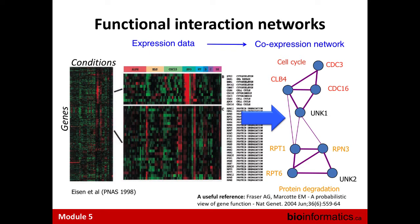If you represent this data as a network connecting genes based on similarity in expression pattern, then genes with stronger connections are more likely to have the same function. For example, some protein degradation complex genes are here, some unknown genes are there, and cell cycle genes are on top. You can start making inferences: if you have some unknown genes in this cluster, you can say probably this one is involved in protein degradation, and the one up top might be involved in some sort of cell cycle process.